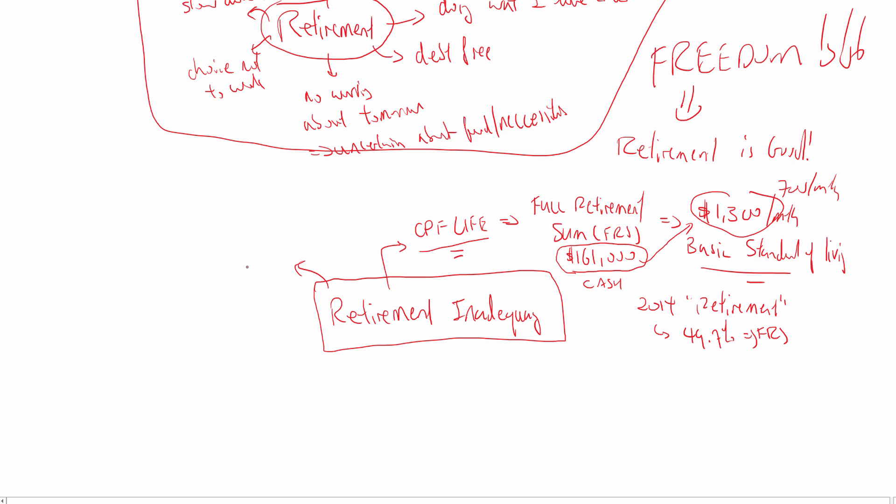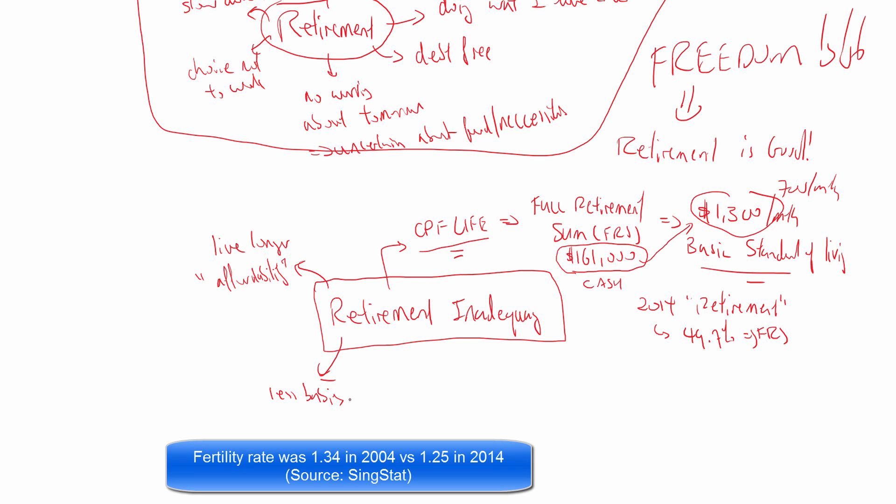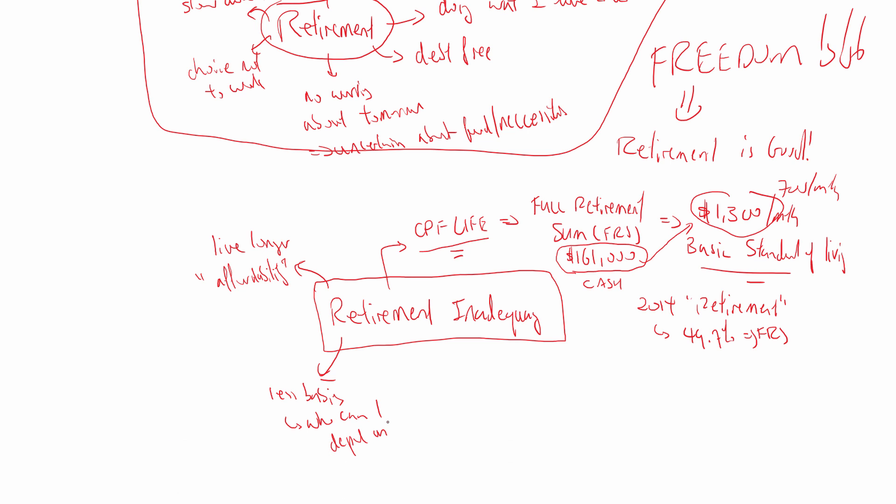Other problems also can surface. Singaporeans generally according to demographics, we have a longer life expectancy. So we are living longer and the problem with living longer is affordability. Can you afford to live that long? Because the longer you live, it means that the more money you will need to sustain your old age. Another problem is also that we have less babies today. Birth rate has dropped. Although in the last two years it seems to be increasing, generally we are still hovering in the 1.2 or 1.3 number. With less babies, the question then becomes, in future who can I depend on?